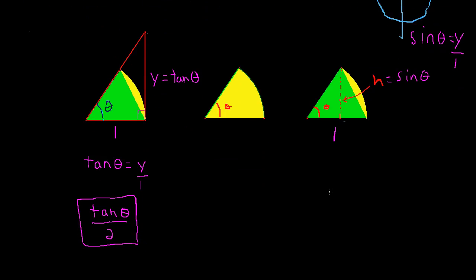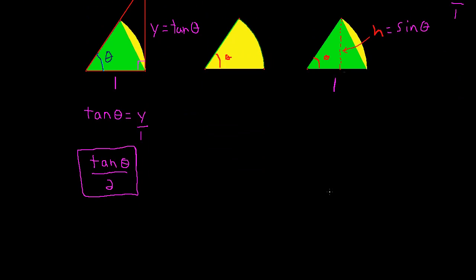So what is the area of that green triangle? It's going to be its base, which is 1, times its height, which is sine of theta, divided by 2. So that will just be the sine of theta divided by 2. That's the area of the green triangle.